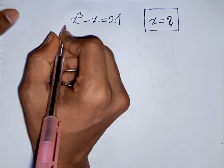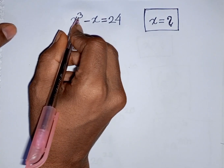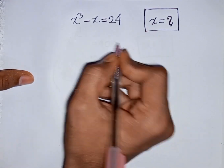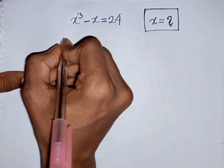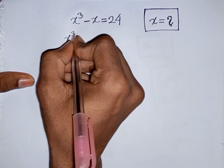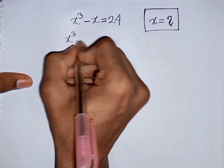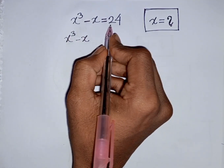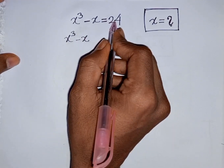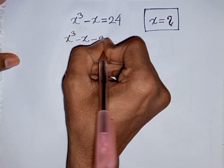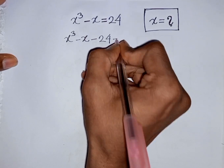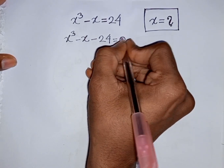How to solve x³ minus x is equal to 24. Find the value of x. We have x³ minus x, then bring plus 24 to the left side, so this will be minus 24, giving us x³ minus x minus 24 is equal to 0.